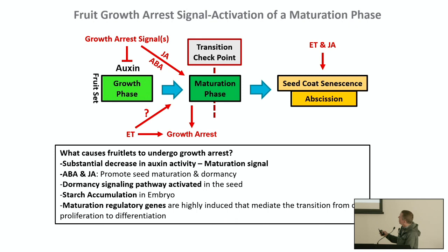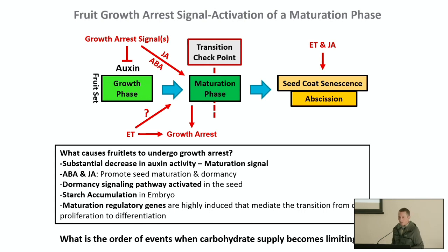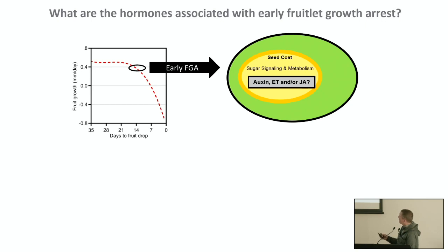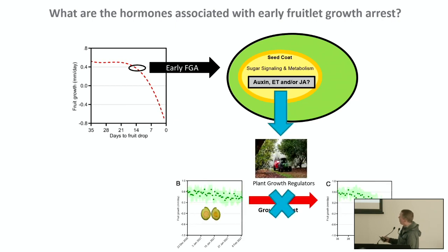We've set up trials this past season to look at the order of these events, critically focusing on the seed coat, which we believe is the key organ mediating this process. By understanding what's happening early, we can then target those hormones with plant growth regulators to block or limit fruit growth arrest and increase productivity.